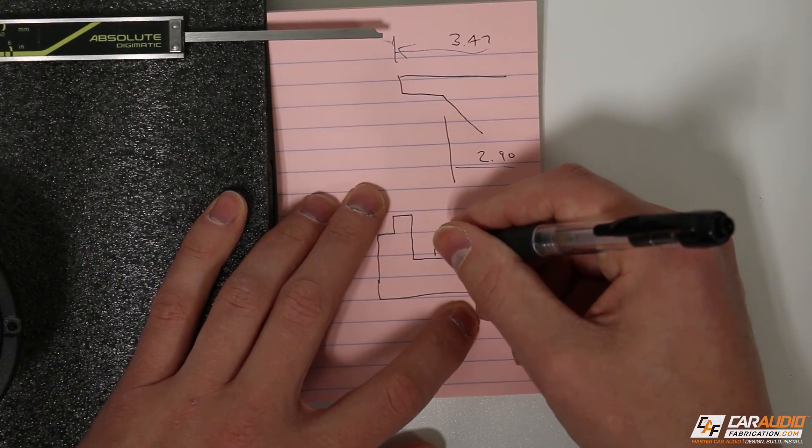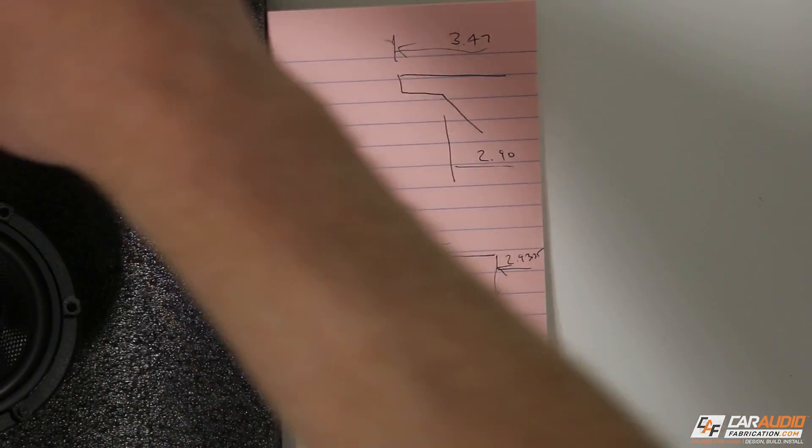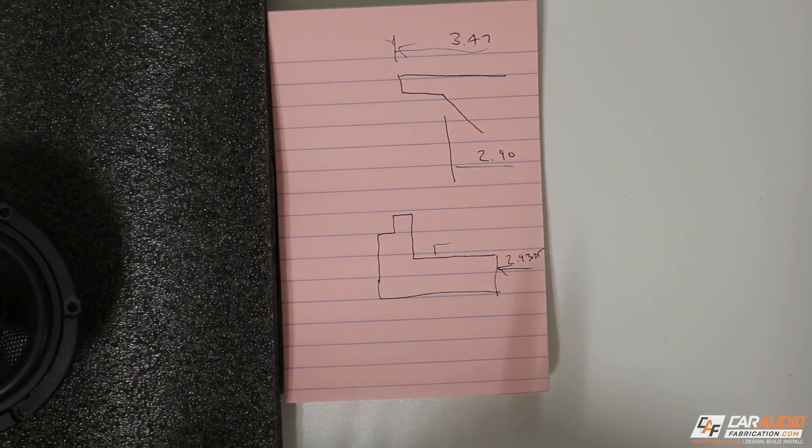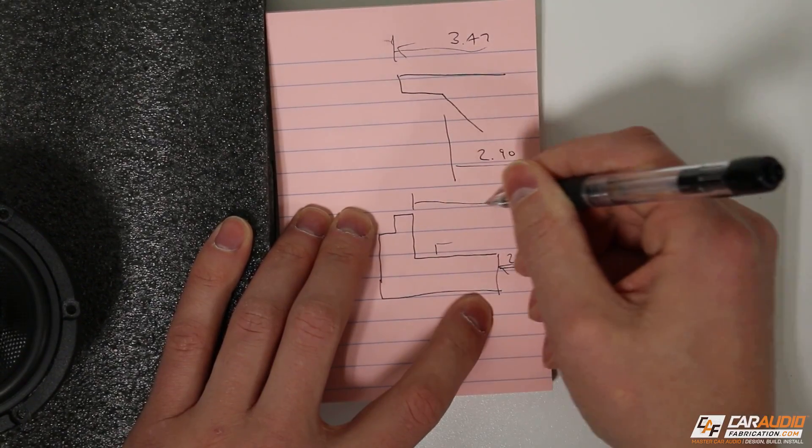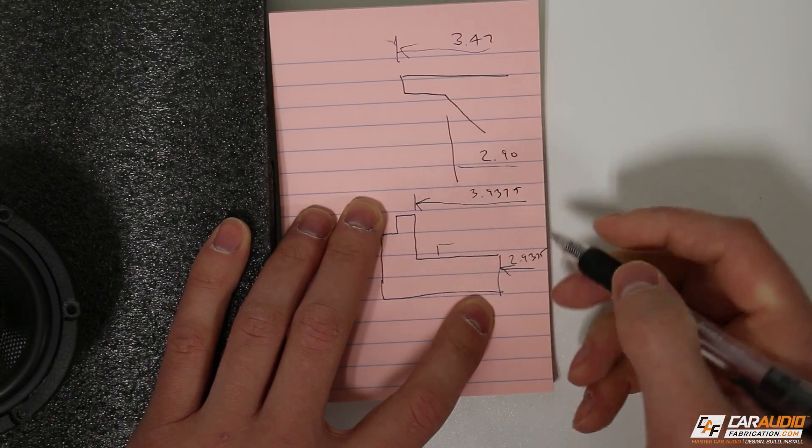But I want to give myself a little bit more. So to this dimension here will be 3.9375. I'm going to add an inch. So this step here is going to be a half inch on each side.